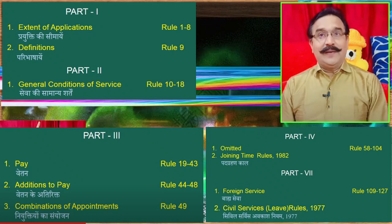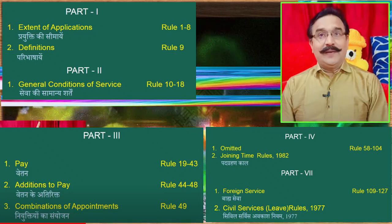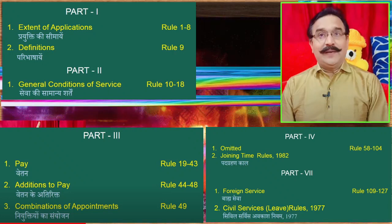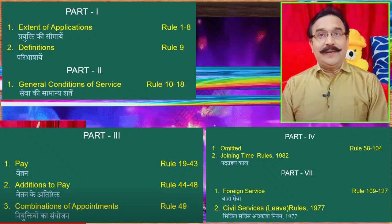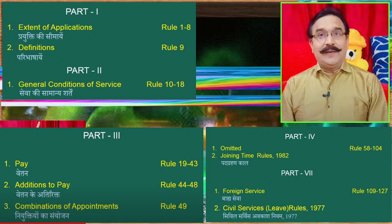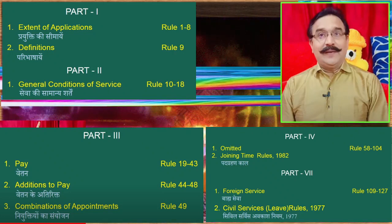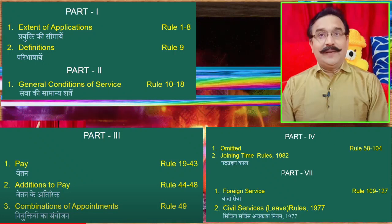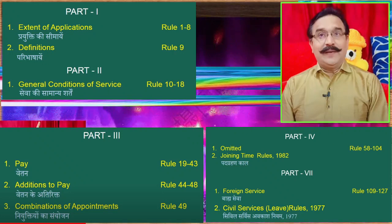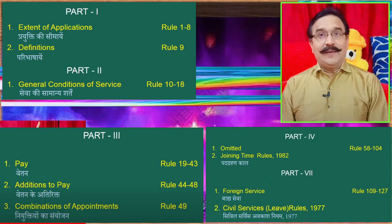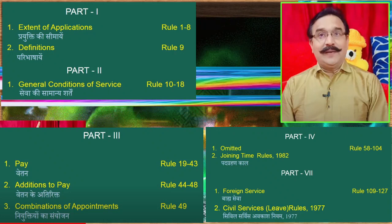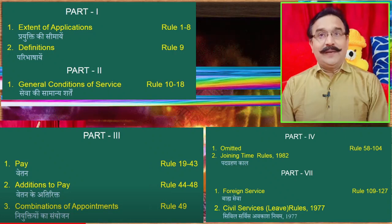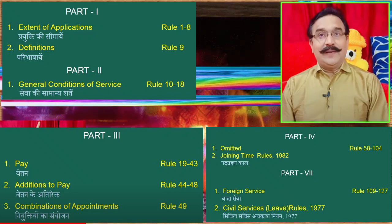FR-SR is very important. Let us understand its structure — which parts are where. Part 1 covers the extent of application, Rules 1 to 8. Part 2 covers definitions in Rule 9, which is a very large rule containing approximately 32 definitions. After Rule 9, Part 1 is complete and Part 2 starts. Part 2 contains general conditions of service — Rule 10 to 18.